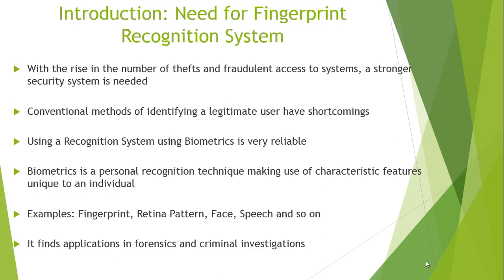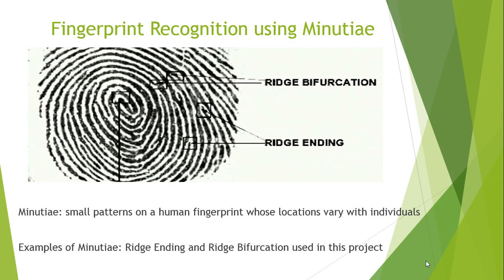I have implemented recognition based on the extraction and matching of minutiae. Minutiae are small patterns on a human fingerprint whose locations vary with individuals. This variation makes each individual have a different fingerprint, and this property of uniqueness is exploited to identify an individual using the fingerprint recognition system. A template of a person is originally stored in the system. The next time the person tries to gain access, their fingerprint would be inputted and the locations of the minutiae of both sets of fingerprints would be compared to find a similarity and obtain a potential match. Two types of minutiae considered are ridge ending, which is a suddenly ending ridge, and ridge bifurcation, which is a sudden forking of the ridge into two.